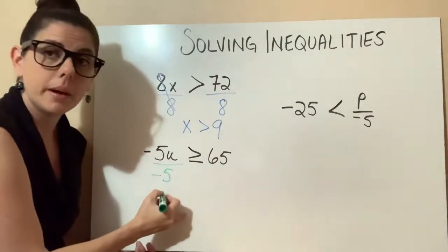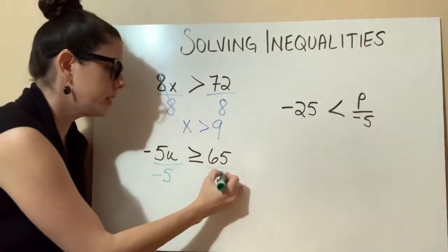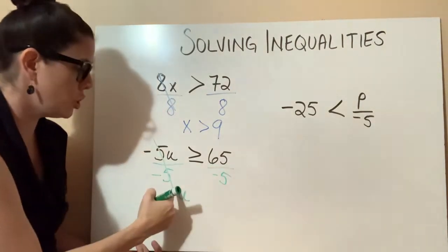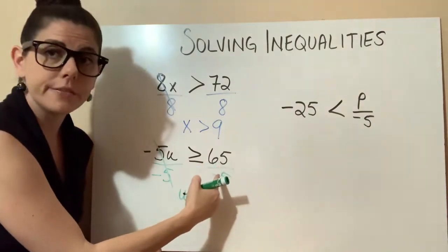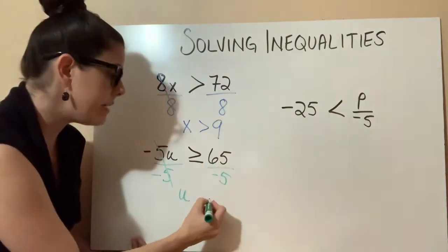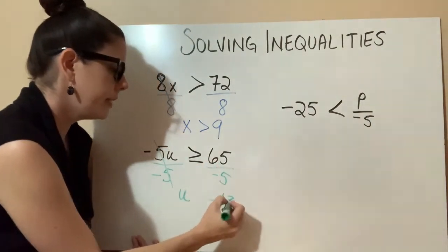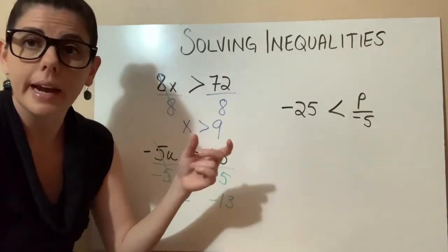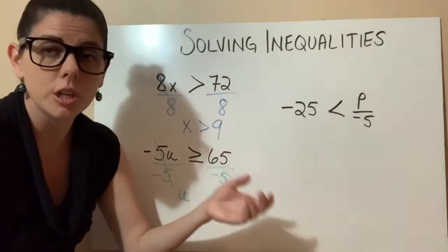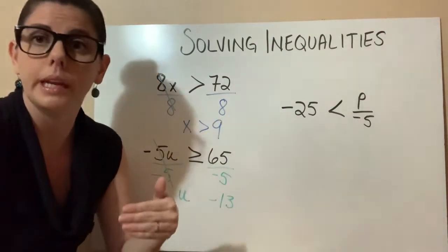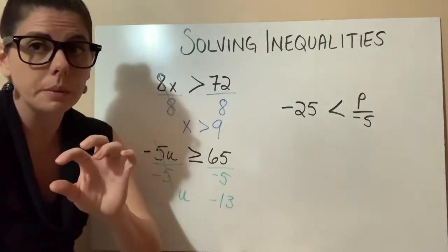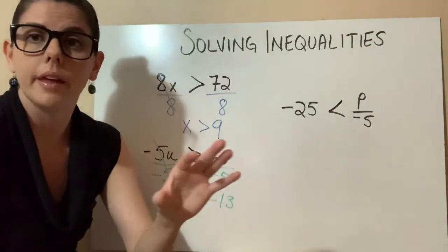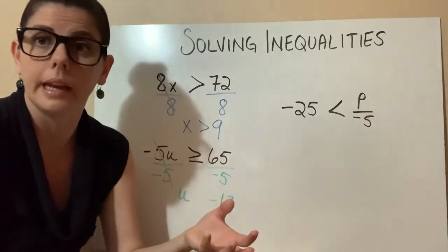We're going to divide by a negative 5 on both sides. These negative 5s are going to cancel, so we're going to be left with a u on one side. And 65 divided by a negative 5 is a negative 13. Remember our properties of integers: if you are dividing a positive and a negative integer, your quotient will be negative. Same thing with multiplying.